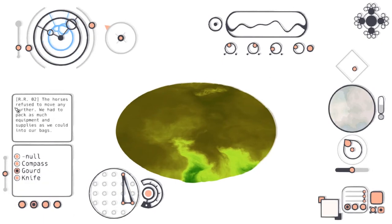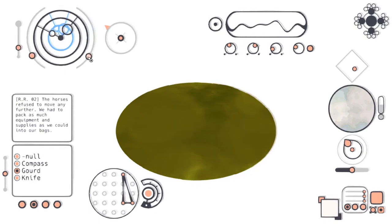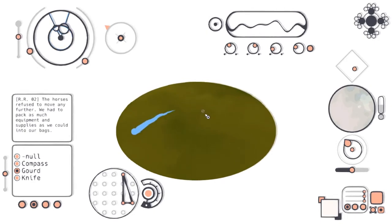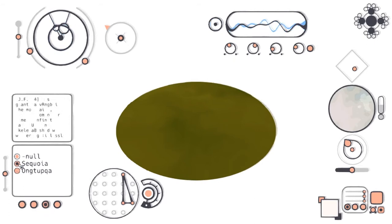The horses refused to move any further. We had to pack as much equipment and supplies as we could into our bags. What have we got here? We've got these are going to be around here. About there. Into a circle. There. We've got it. What have we got, though? Something new. Sequoia. How can such a place even exist? We went deeper and deeper into the cave, yet we are now standing under a stormy sky.